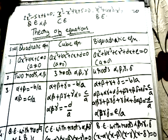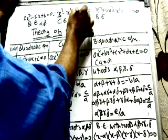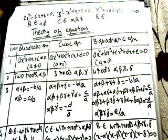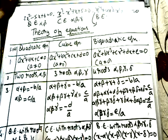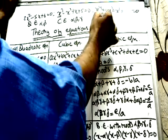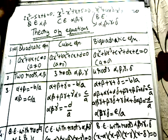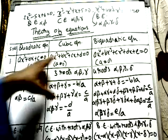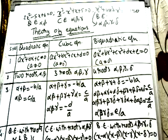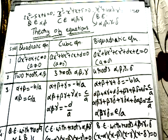For a quadratic equation we have two roots, denoted by α and β. For cubic equations we have three roots, denoted by α, β, and γ. For a biquadratic equation we have four roots: α, β, γ, and δ. So a quadratic has two roots, a cubic has three roots, and a biquadratic has four roots.